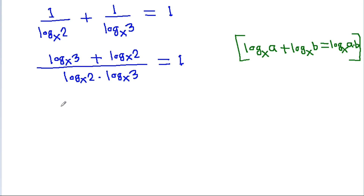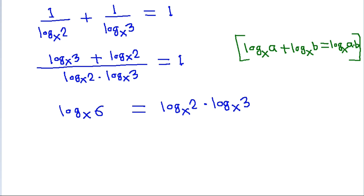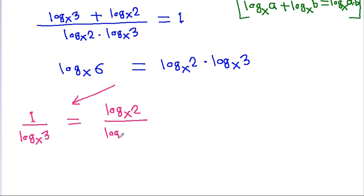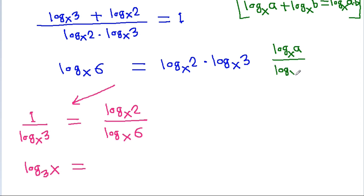So this becomes log base x of 6 equals log base x of 2 times log base x of 3. From here, using the property that log base x of a divided by log base x of b equals log base b of a, we can simplify 1 by log base x of 3 equals log base x of 2 divided by log base x of 6.